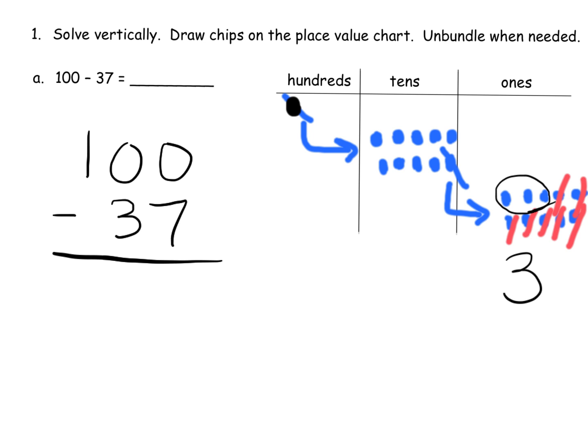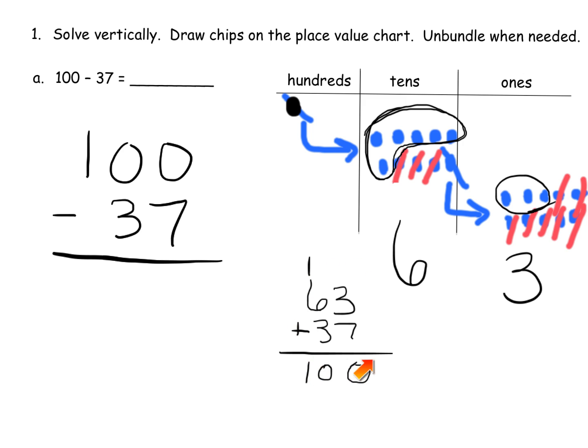One idea: how do we know if we're right? We can use fact families. Take 63 and add 37 to make sure we end up with 100. Sure enough, we end up with 100. So it would be a good idea to teach students to use fact families and addition to check their subtraction.